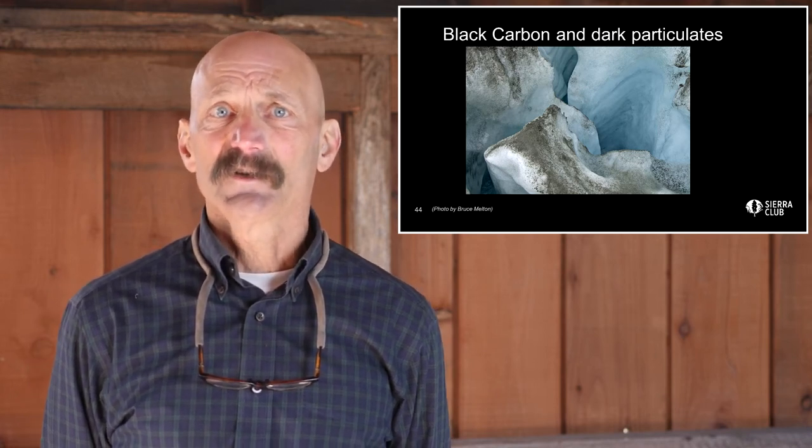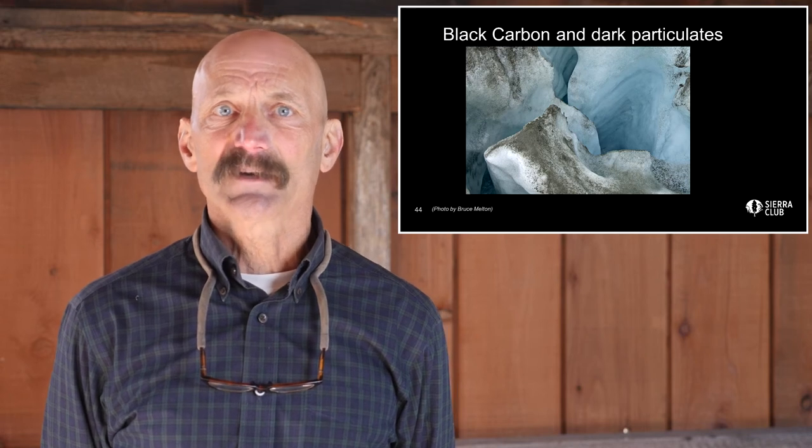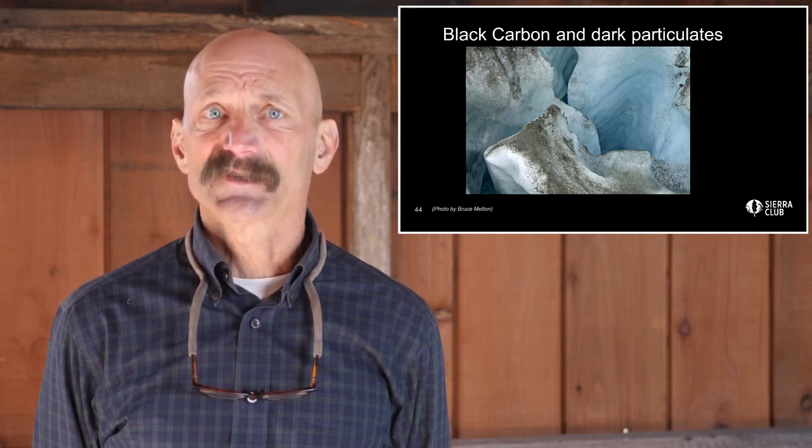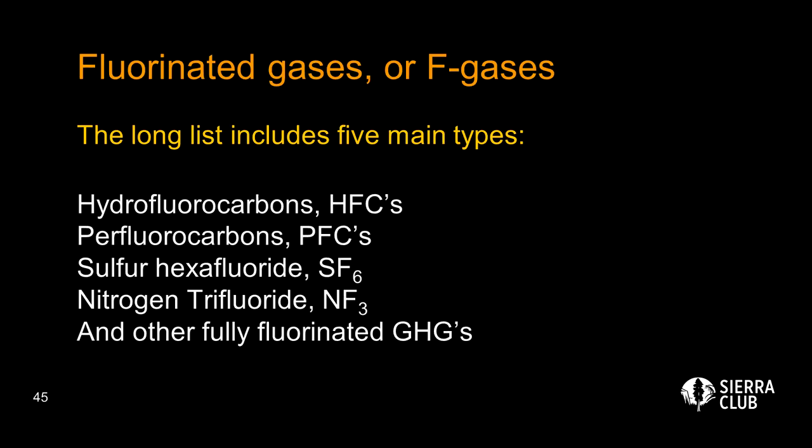This image, taken in Greenland, shows the impact of black carbon and other dark particulates that have settled on the ice. Another class of short-lived climate forcers is the large family of chemical compounds known as fluorinated gases, or F-gases, that are widely used as refrigerants, solvents, pesticides, electrical insulators, blowing agents in the production of rigid insulation, and in a wide range of industrial processes.